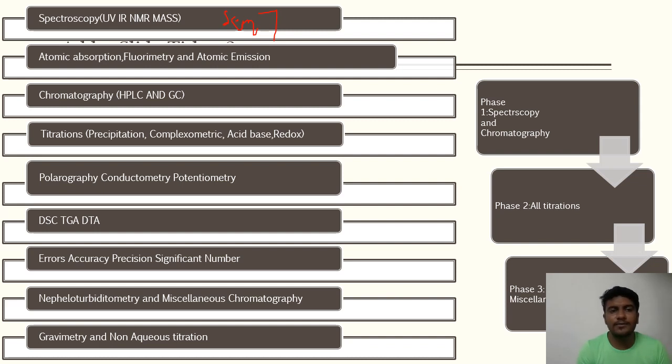These spectroscopy are important because from NMR and mass there are questions that appear either on coupling constant or on the graph or in the fragmentation or in the ionization or in the detectors or the source.